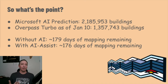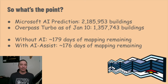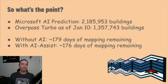What's the point? Well, according to Microsoft's AI prediction, there are over 2 million buildings in Colorado. Looking at Overpass Turbo recently, we can see about 60% of that has been mapped already. We can estimate that at my mapping speed of about 3.21 buildings per minute without AI assistance, that's 179 sleepless days. With AI assistance and an average of about 3.27, I would get three days of my life back — which you may or may not consider a significant difference.